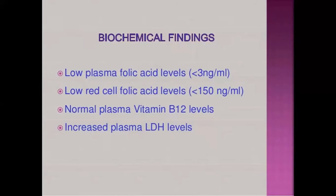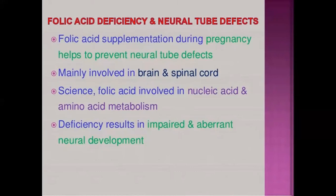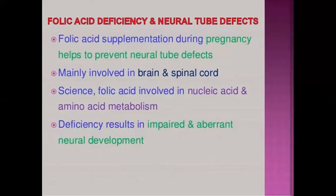Folic acid supplementation during pregnancy helps to prevent neural tube defects, mainly involving the brain and spinal cord. Folic acid is involved in nucleic acid and amino acid metabolism, and its deficiency results in impaired neural development. Areas marked in diagrams indicate where neural tube defects occur in folic acid deficiency.